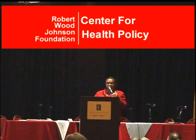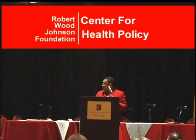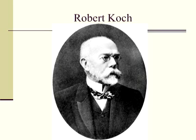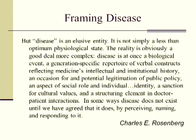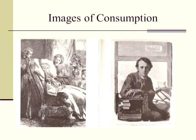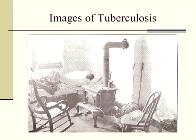There were some scientific and medical advances in the 19th century important to tuberculosis. Robert Koch in 1882 discovered the tubercle bacillus. In 1895, Röntgen invented x-rays so you could see the lungs. But diseases are framed by who suffers from them. In the late 19th century, images of tuberculosis were very romantic — a wasting away. But the images of tuberculosis in African Americans in the early 20th century were entirely different. The same disease was framed and interpreted very differently.